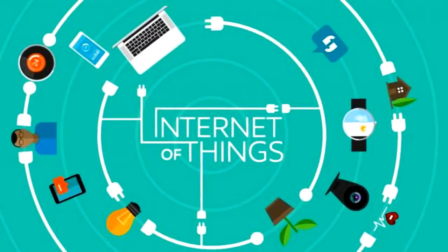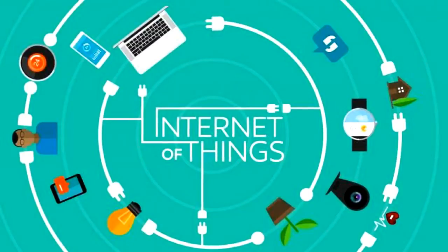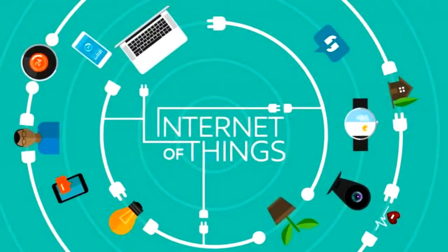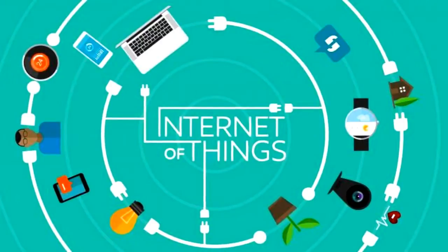As we know, IoT is the network of things and people who communicate to one another using various wireless and wired technologies for various reasons. In IoT, no one technology is involved but it consists of multiple technologies.